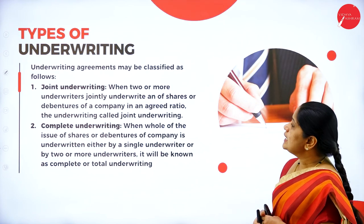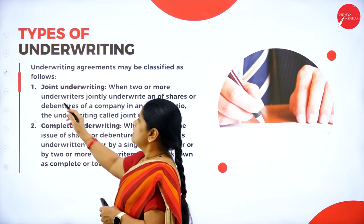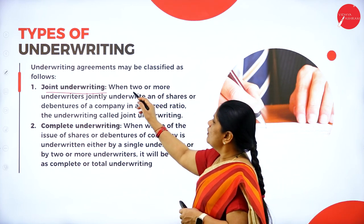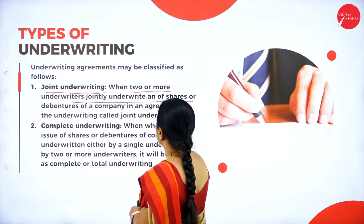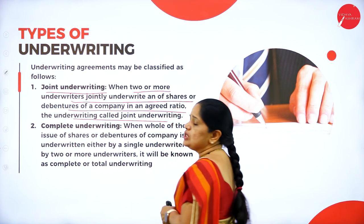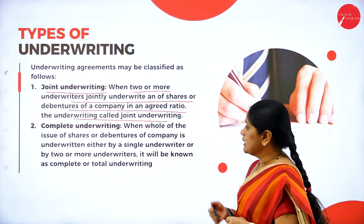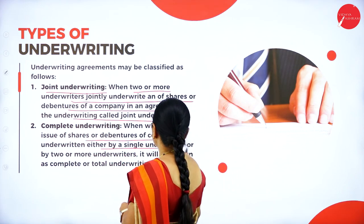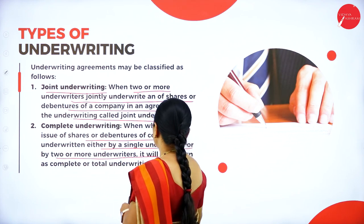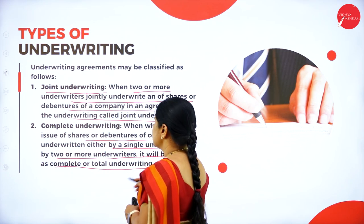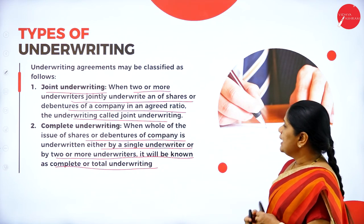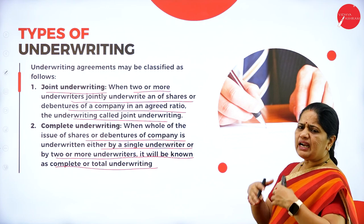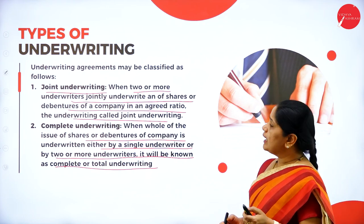Now let us look at the types of underwriting. The first type is joint underwriting: when two or more underwriters jointly underwrite shares or debentures of a company in an agreed ratio, it is called joint underwriting. The second type is complete underwriting: when the whole issue of shares or debentures is underwritten either by a single underwriter or by two or more underwriters, it is known as complete or total underwriting.